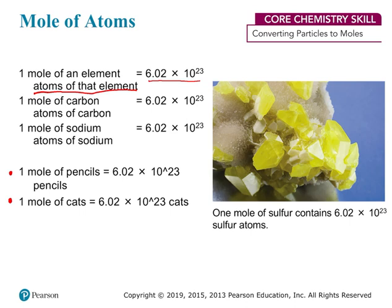This is exactly the same as saying I have a dozen cats — I have 12 cats — or I have a dozen pencils — I have 12 pencils. So you can really use Avogadro's number to count anything. If you have exactly 6.02 times 10 to the 23rd, that means you have one mole.